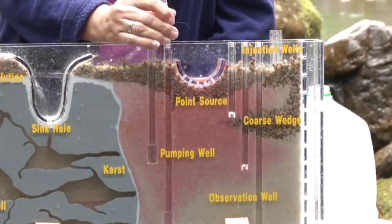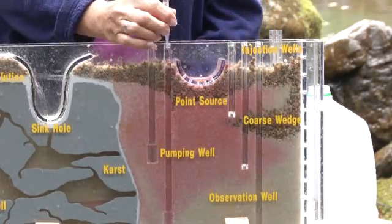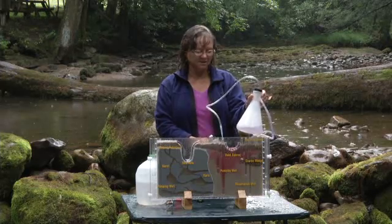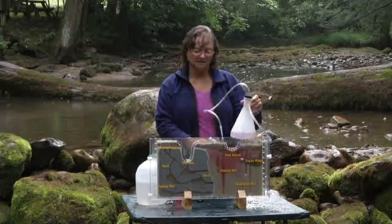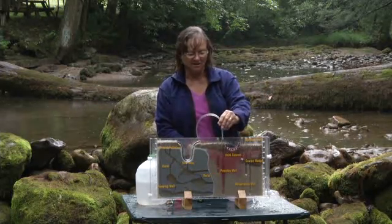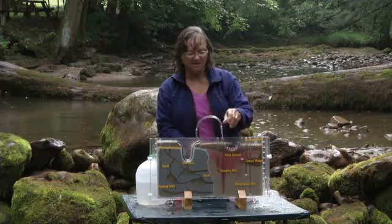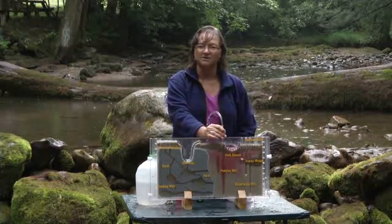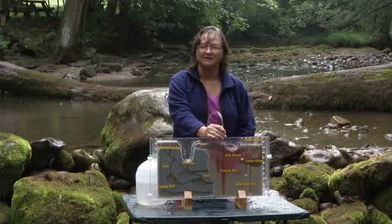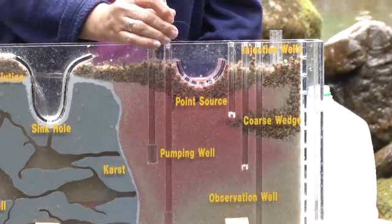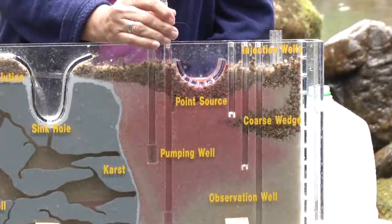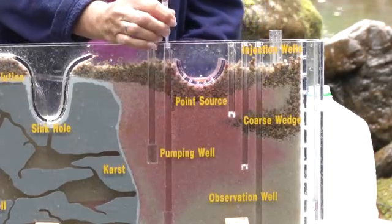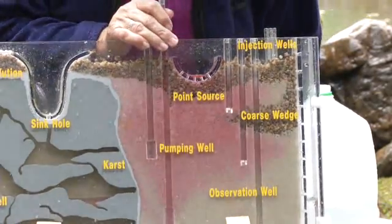It looks like that pollution has gotten down to the well. You can see in my pumping flask that it has turned a little bit pink — this pollution is starting to come up in my well. This is why we have to be so careful with what we do on the surface, because it does go down and affect our groundwater. Remember how long that took for the pollution to get from the surface all the way down to the well.